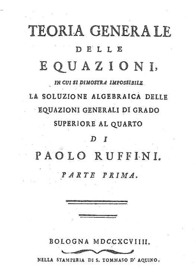Around 1770, Joseph Louis Lagrange began the groundwork that unified the many different tricks that had been used up to that point to solve equations, relating them to the theory of groups of permutations, in the form of Lagrange resolvents. This innovative work by Lagrange was a precursor to Galois theory, and its failure to develop solutions for equations of fifth and higher degrees hinted that such solutions might be impossible, but it did not provide conclusive proof.